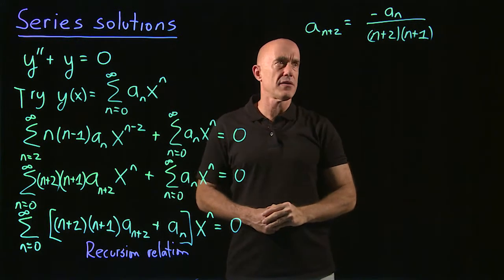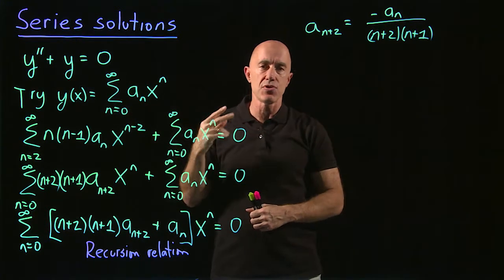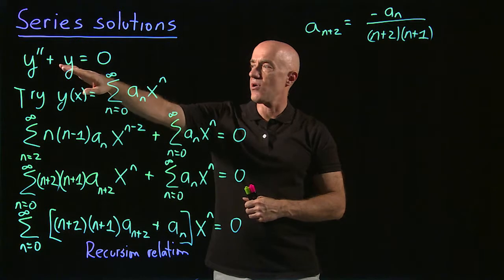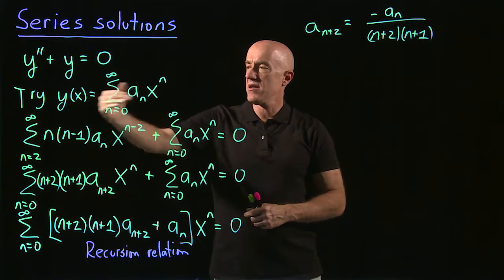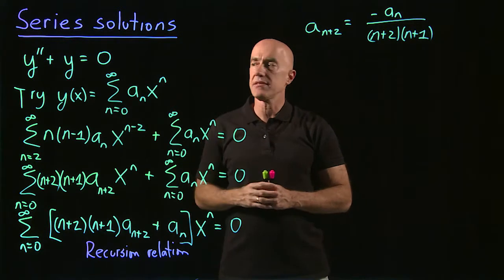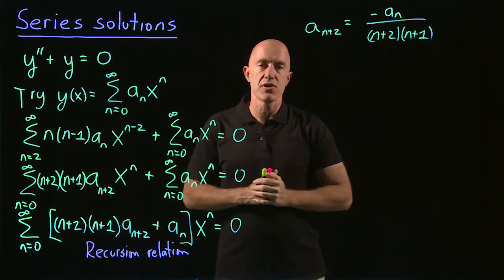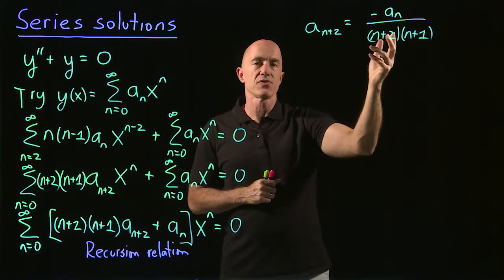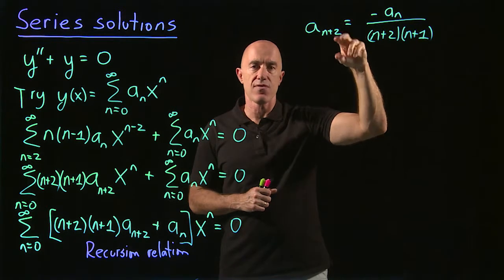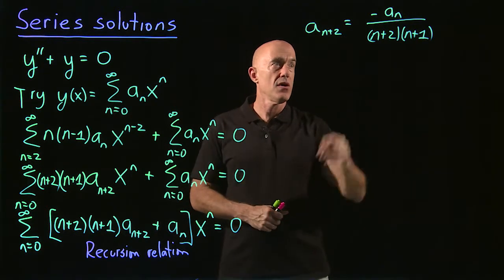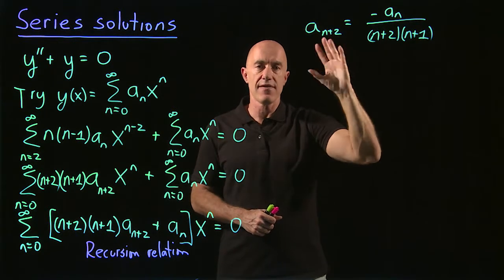Remember that a second-order linear differential equation has two initial values — we need to know y of 0 and y prime of 0. So any solution must have two free constants to satisfy the two initial conditions. We need to start the recursion relation somewhere. Starting with n equals 0, a0 becomes the free constant and the recursion relation gives us a2, a4, a6, etc. Or we can start with a1 at n equals 1, and the recursion relation gives us a3, a5, and so on.